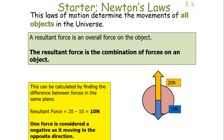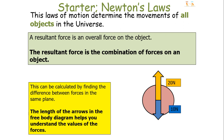One force will always be considered negative as it's acting in the opposite direction. In this particular example, I have considered down to be the negative direction; however, there is nothing wrong with stating that upwards is the negative direction, and your resultant force would be minus 10 in that case. Remember, this is a free body diagram — free body diagrams help you understand the values of forces, and the length of the arrow helps determine the value, so the 20 newton arrow is twice the length of the 10 newton arrow.